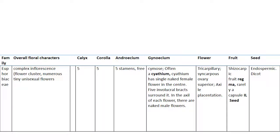The flower has a tricarpellary syncarpous ovary, superior. Axile placentation. Fruit is schizocarp or regma, rarely capsule. Seeds are endospermic, dicot.